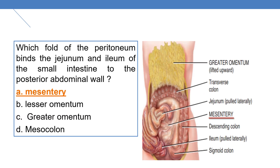Which fold of the peritoneum binds the jejunum and ileum of the small intestine to the posterior abdominal wall? It is the mesentery. Here you can see the peritoneal fold mesentery binding the jejunum and ileum of the small intestine to the posterior abdominal wall.